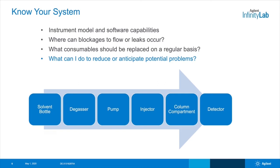Knowing what consumables to replace on a regular basis can also prevent issues and downtime. Definitely look into the details of your particular instrument and figure out what it offers you. What are your LC software capabilities? Are there products or features within your system that can simplify use or help you diagnose issues quickly? Nowadays, there's a lot more technology integrated into your instruments that can make your LC simpler to operate. Remember too, that we often think of chromatography issues as being a result of the column, but there can be issues beyond the column that can affect your separation.